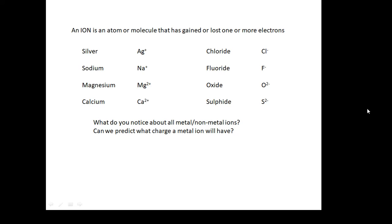For example, Ag+, Na+, Mg2+, Ca2+ - if it gains an electron, Cl-, F-. These are positive and negative ions. What do you notice? The ones on the left are metals, the ones on the right are non-metals. Metal ions are positive, non-metal ions are negative. Can we predict what charge a metal ion will have?